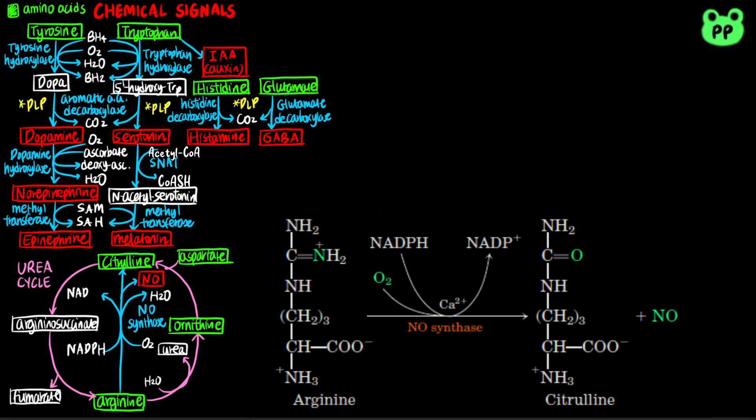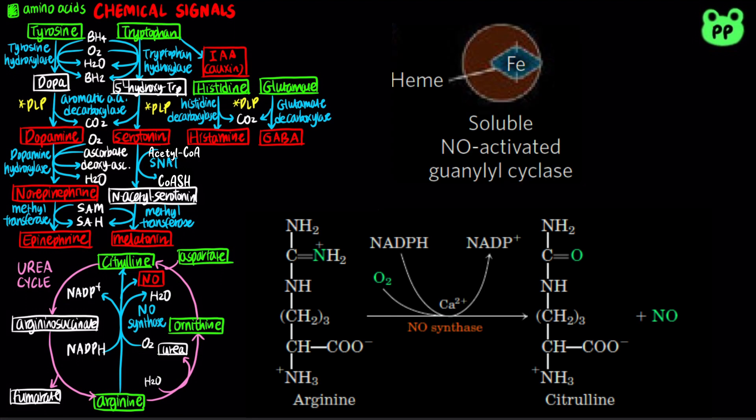Nitric oxide serves as a powerful vasodilator through the soluble guanylyl cyclase, which increases the concentration of cyclic GMP.